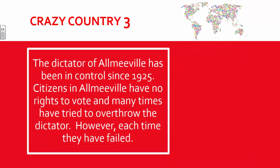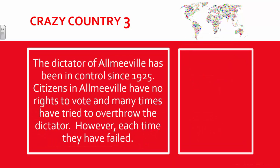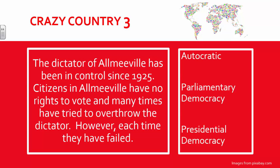A third crazy country example: the dictator of Almeaville has been in control since 1925. Citizens in Almeaville have no rights to vote and many times have tried to overthrow the dictator. However, each time they have failed. This is obviously an autocratic government.